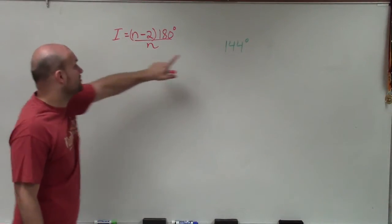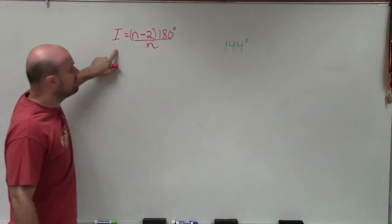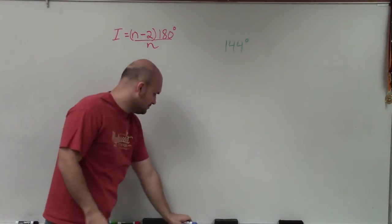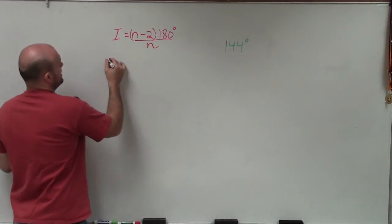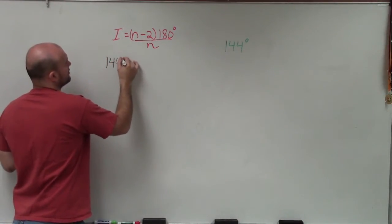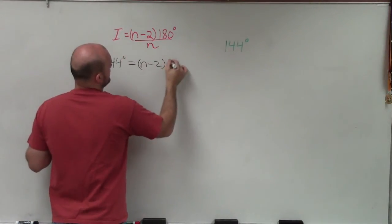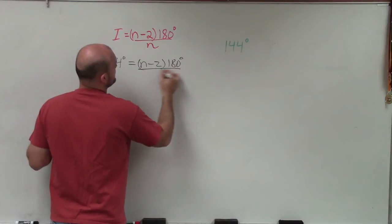To solve for this, I'm simply going to plug 144 degrees in for i, which represents the measure of one interior angle. I dropped my marker, so we'll use blue instead. So I write 144 degrees equals n minus 2 times 180 degrees divided by n.